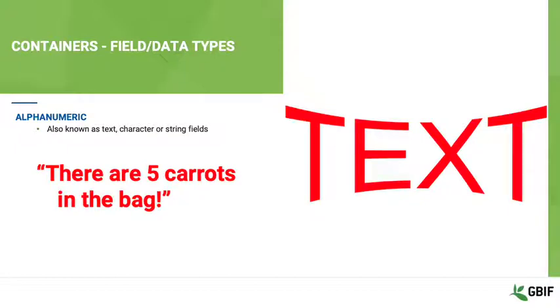Alphanumeric fields are also referred to as text, character or string fields. They can hold any letter, number or symbol in the character set and usually have a defined character limit. Entering more characters than the character limit can often result in truncation and loss of data on save.